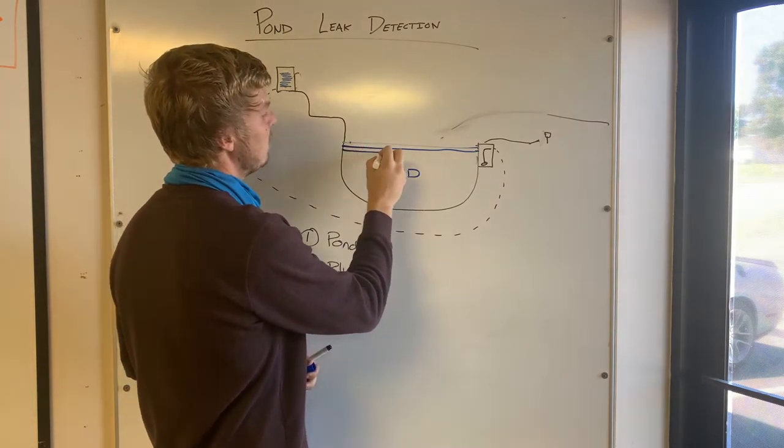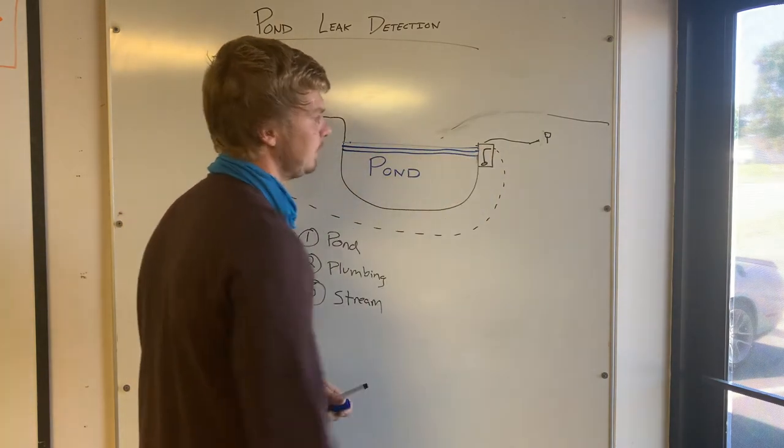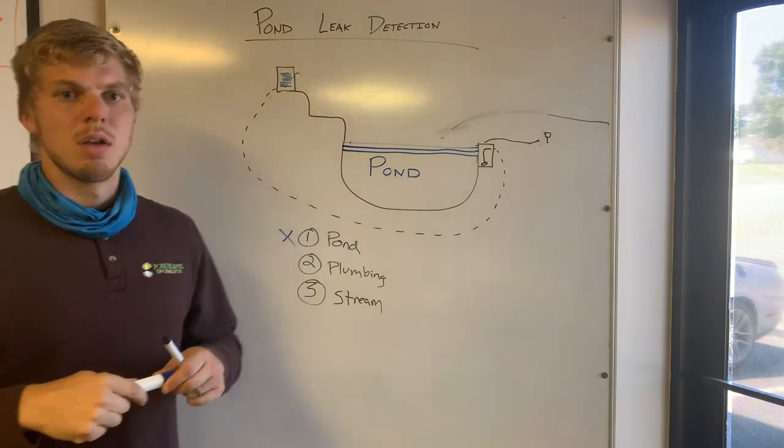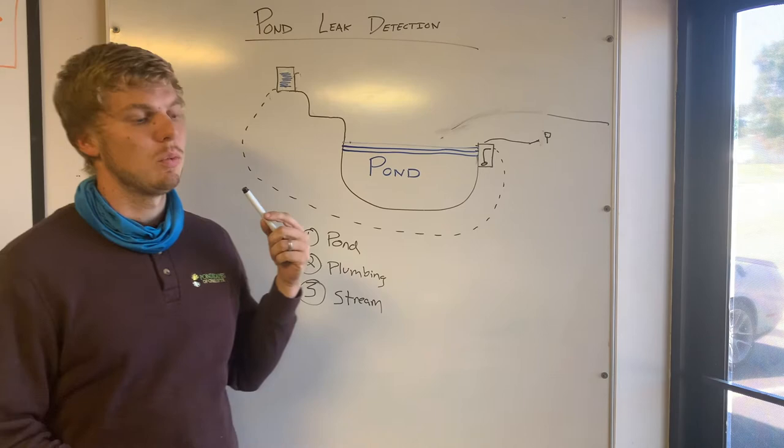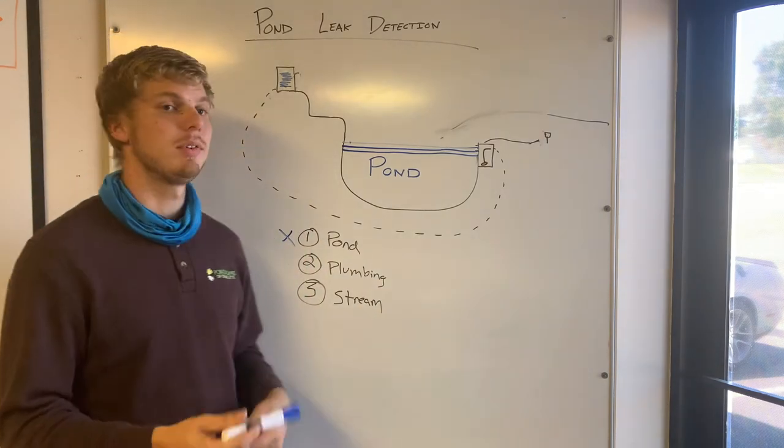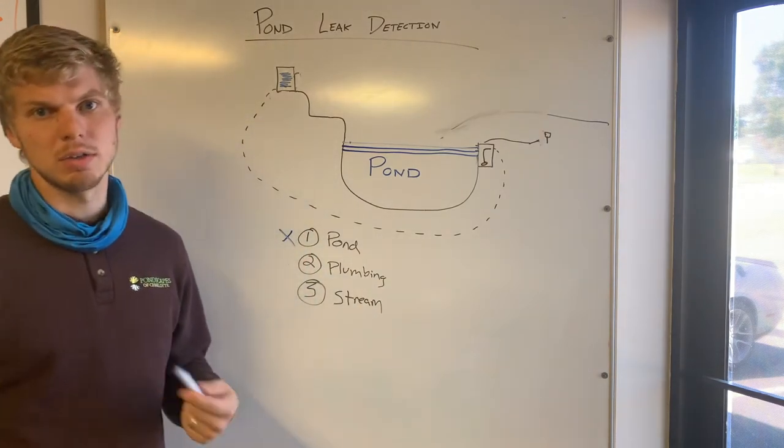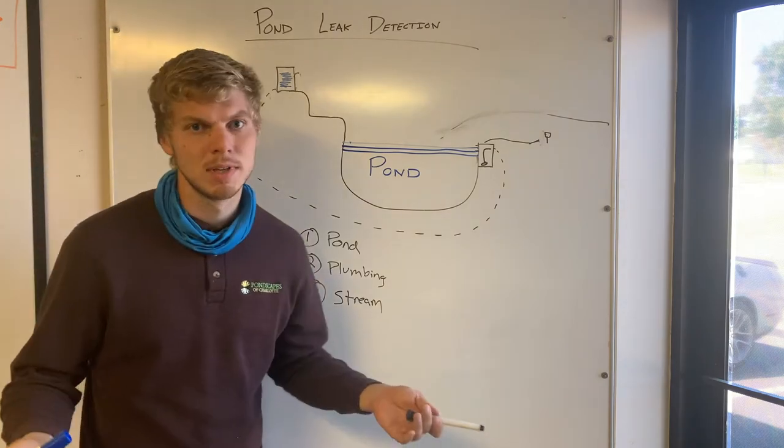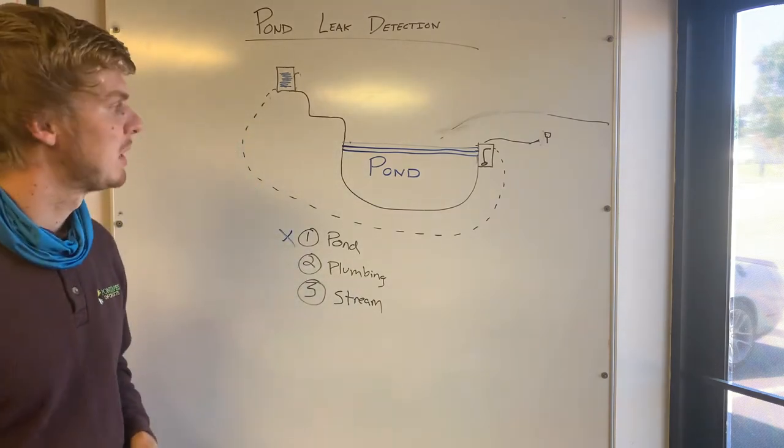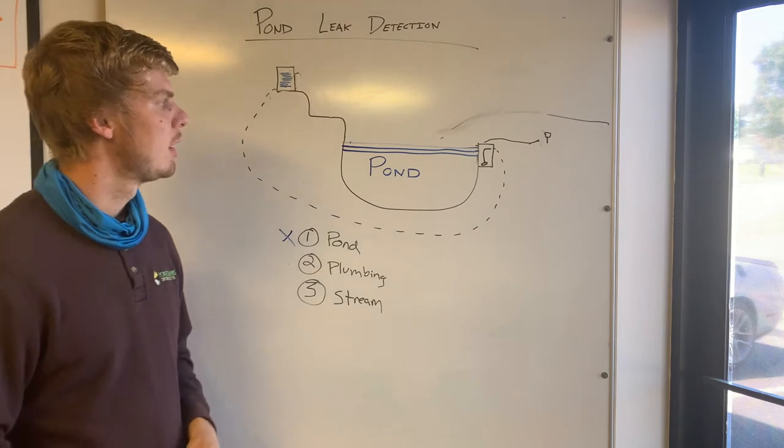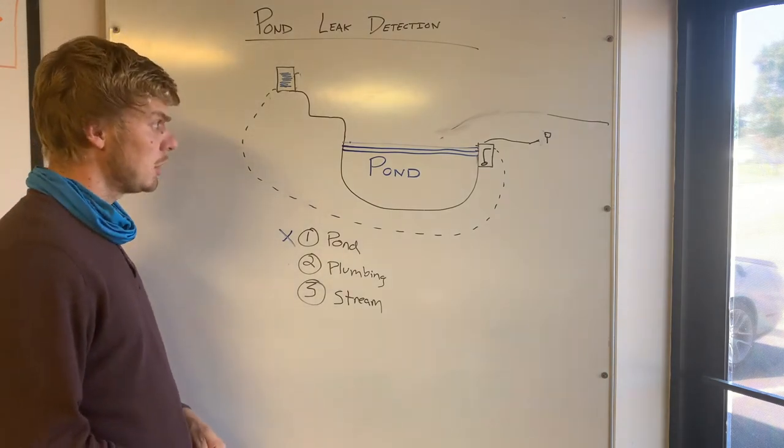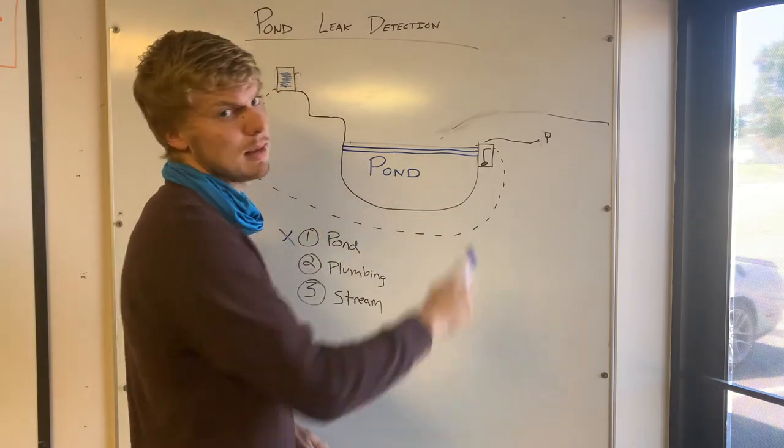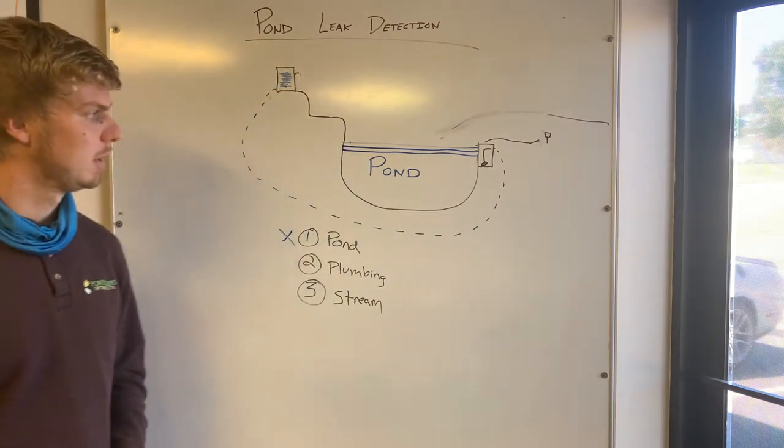Let's say it's gone down even more, another two inches. You're going to take a photo, send it to us, same process and wait 24 hours with no rain. If it rains then you got to wait another 24 hours because it's adding water to the system, it's going to mess up the results.